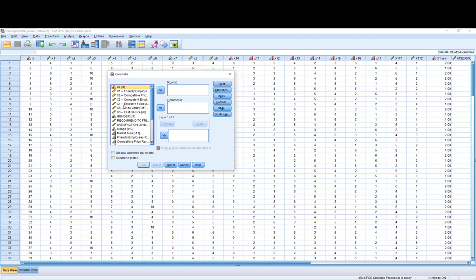We need to select our first variable, in this case market area. It doesn't matter which way around we put them, but market area I'm going to put in row and gender I'm going to put in columns.